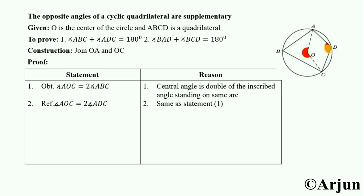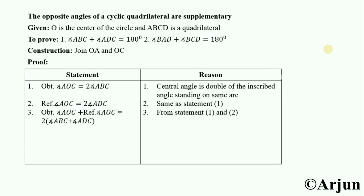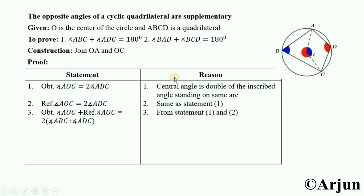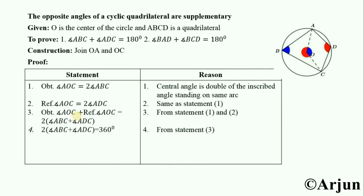Adding statements one and two: angle AOC plus reflex angle AOC equals two times angle ABC plus two times angle ADC. Now, obtuse angle AOC plus reflex angle AOC equals a full angle, that is 360 degrees. This is from statement number three.